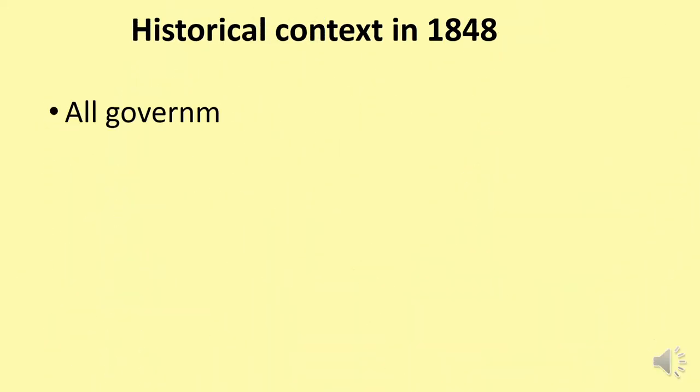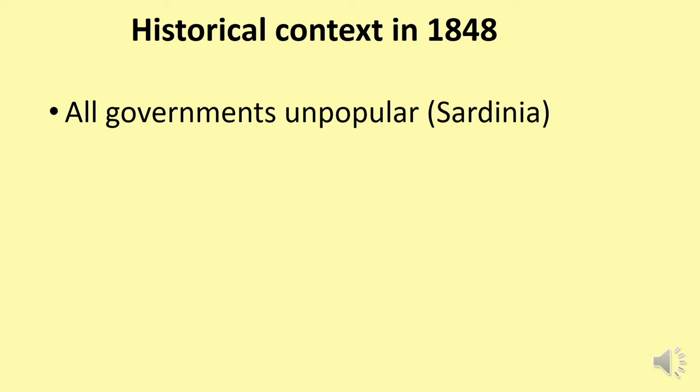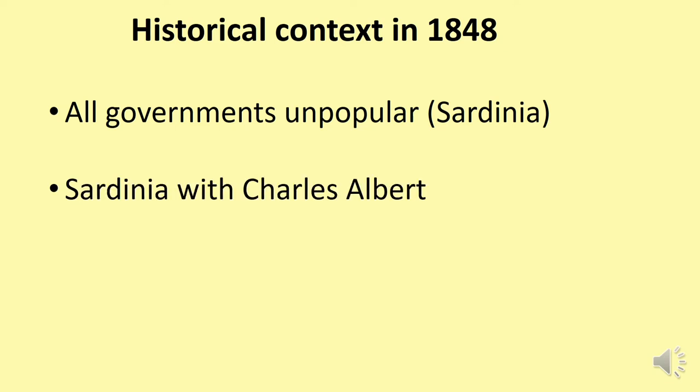The old governments — Venezia, Tuscany, Modena, the Kingdom of the Two Sicilies, the Papal States — were all unpopular, except for Sardinia. Sardinia was not unpopular simply because it had a king. At that time the king was Charles Albert, and one of his advisors was Camillo di Cavour, someone we will talk about shortly. Sardinia took the lead — just as Prussia took the lead in Germany.